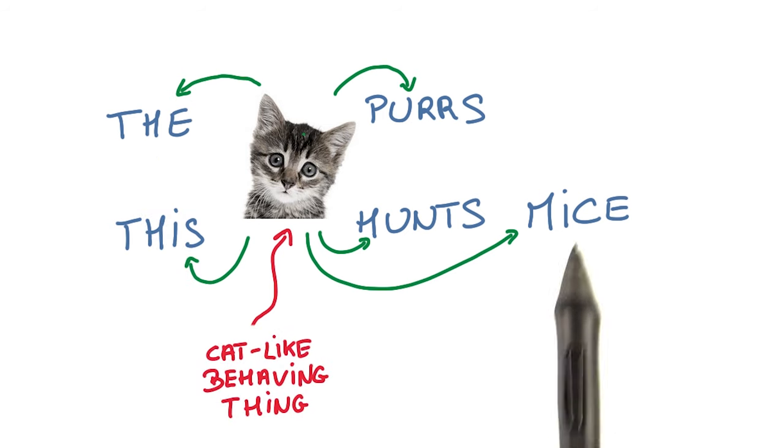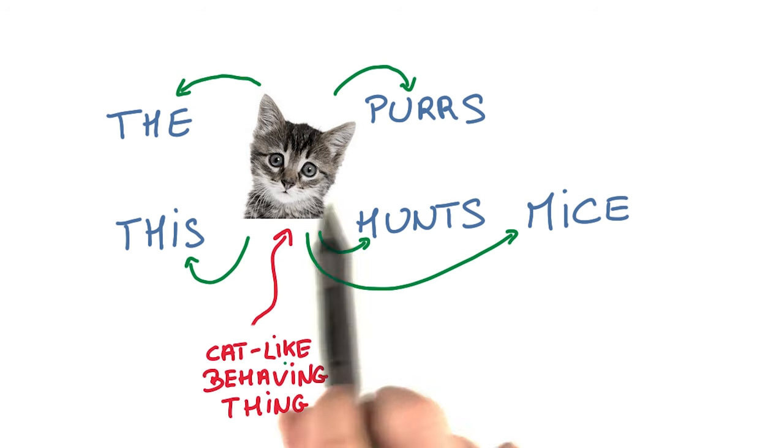The context gives you a strong idea that those words are similar. You have to be cat-like to purr and hunt mice. So let's learn to predict a word's context.